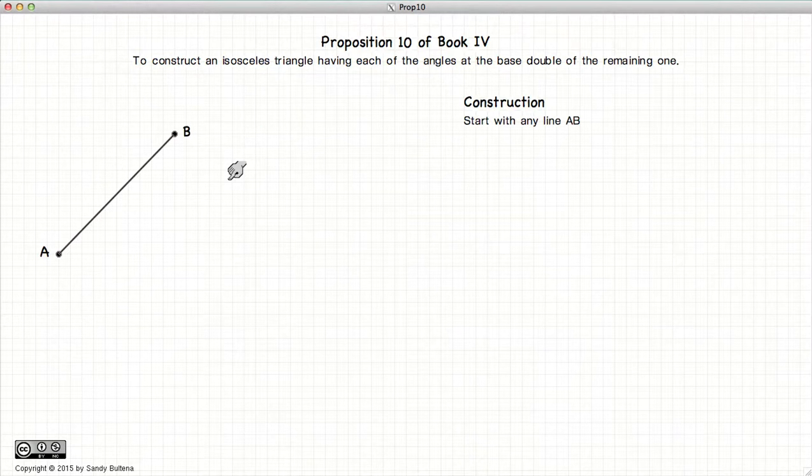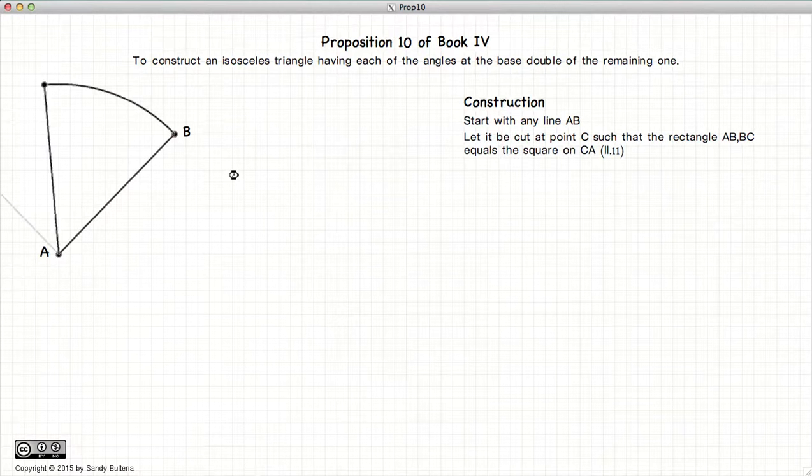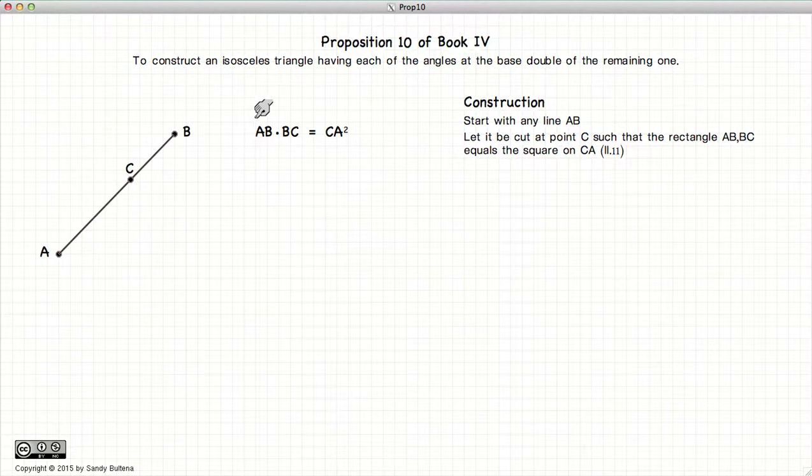Now to do so we start with a straight line AB. Any straight line will do. And now we find the point C on the line AB such that this equation holds: AB times BC equals CA squared. The method for finding the point C on the line AB is described in detail in Proposition 11 of Book 2. If you'd like to you can always go back and have a look at that proposition to refresh your memory if you want to know how it was constructed.